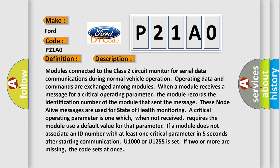If a module does not associate an ID number with at least one critical parameter in five seconds after starting communication, U1000 or U1255 is set. If two or more are missing, the code sets at once.